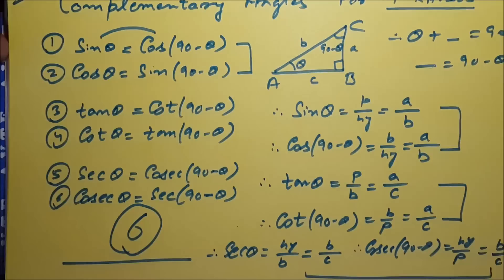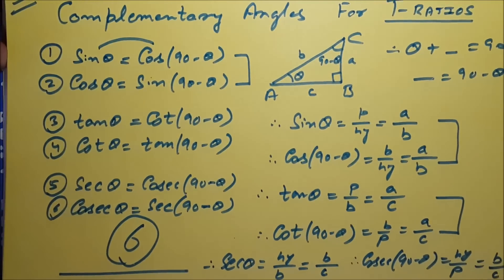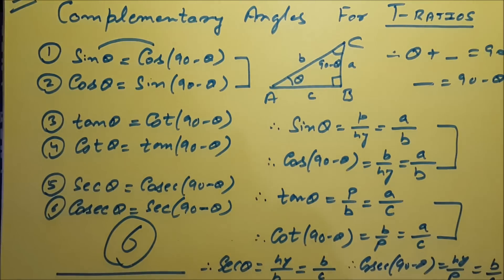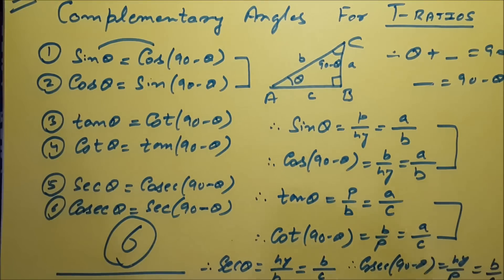So we have learned the formulas of complementary angles in trigonometry: sin theta equals cos(90 minus theta), cos theta equals sin(90 minus theta), tan theta equals cot(90 minus theta), cot theta equals tan(90 minus theta), sec theta equals cosec(90 minus theta), and cosec theta equals sec(90 minus theta).